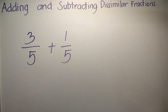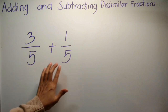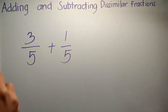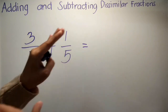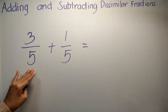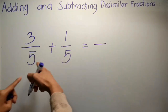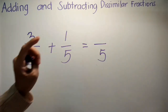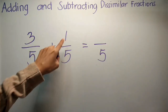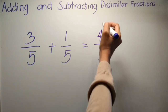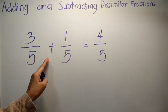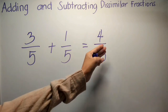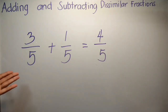Like last time, nag-try tayong mag-add ng similar fractions. Masasabi mo siyang similar fractions, di ba, kapag ang kanyang denominator ay magkatulad. Madali lang siyang i-add or i-subtract kapag similar fractions kasi i-copy mo lang ang kanyang denominator sa baba, and then do the operation sa taas. So 3 plus 1 is 4, so ibig sabihin 3 fifth plus 1 fifth equals 4 fifths. Madali lang siya.